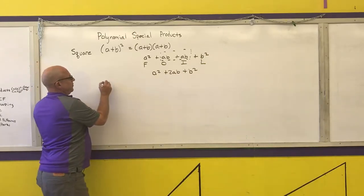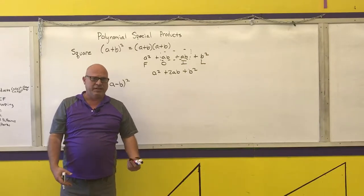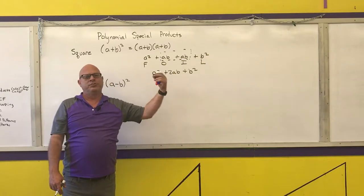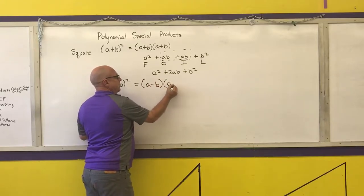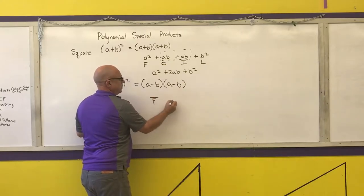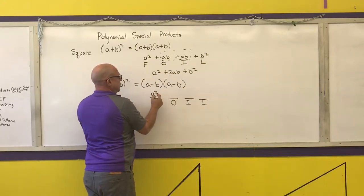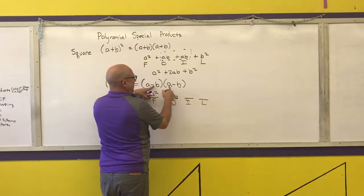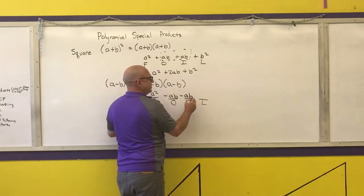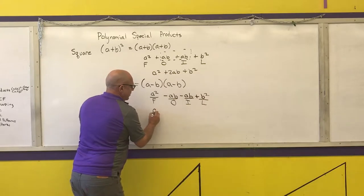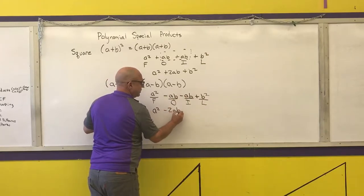When I do the square of a difference, I do the same thing. A minus b squared is a minus b times a minus b. FOILing it: a times a is a squared, a times negative b is negative ab, negative b times a is negative ab, and negative b times negative b is positive b squared. Combining the middle terms: negative one minus one is negative two, giving a squared minus 2ab plus b squared.